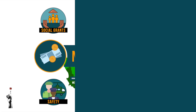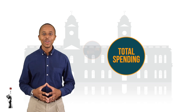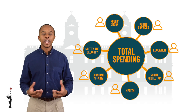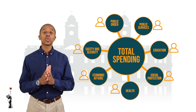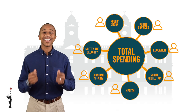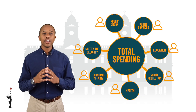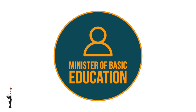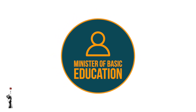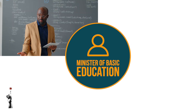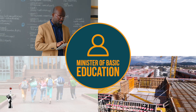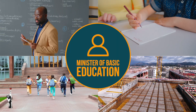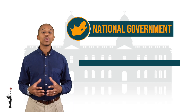Now remember, we spoke about different departments and the different ministers of each department. Each department has a sole responsibility of ensuring that its funds are allocated effectively. For example, the Minister of Basic Education is in charge of education — they are responsible for hiring new teachers, building new schools, and launching new projects, among many other responsibilities.